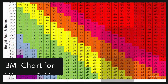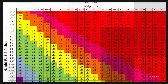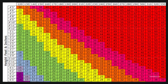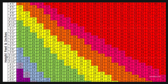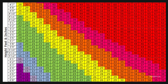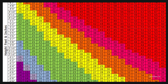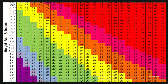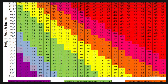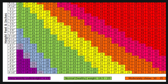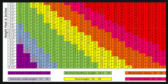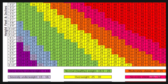BMI chart for women and men. Here is an example of a BMI chart. This can be used for both women and men, as BMI and the ratings are not gender specific. Read across the top to find your weight in pounds. Read down to find your height in feet and inches. Where the two cross is the figure for your BMI. The color coding provides your BMI range classification.